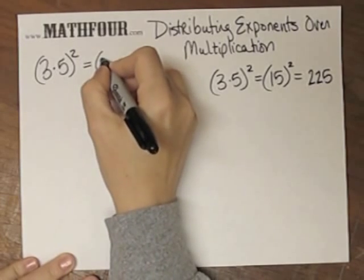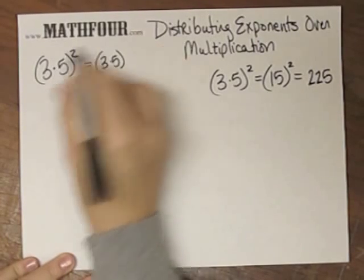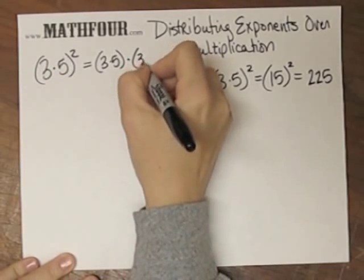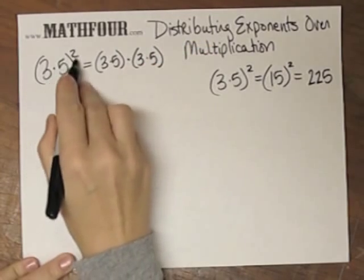Squared means two things, this thing duplicated twice, multiplied together. So that's what it means to be squared.